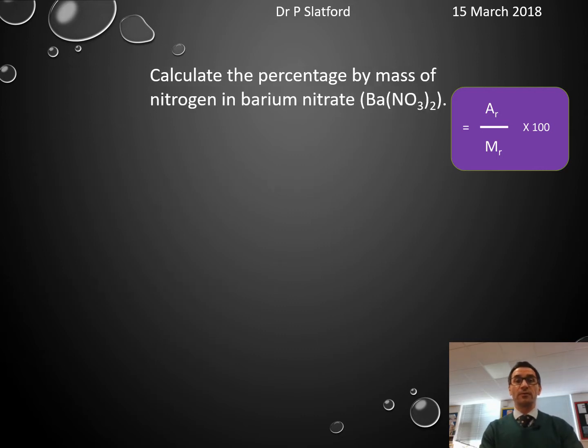Another example: How much nitrogen by mass is there in barium nitrate (Ba(NO3)2)? Be careful of the numbers and brackets. Work out the Mr: barium is 137, nitrogen is 14 but you've got two of them, oxygen is 16 but there are six of them. That comes out as 261.